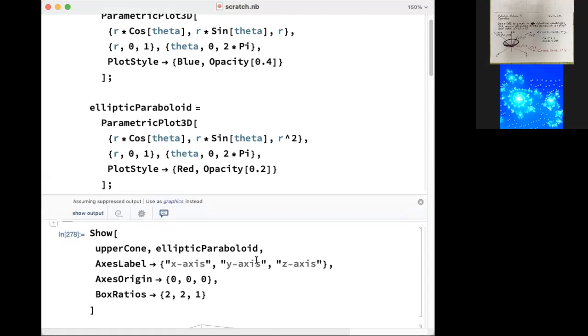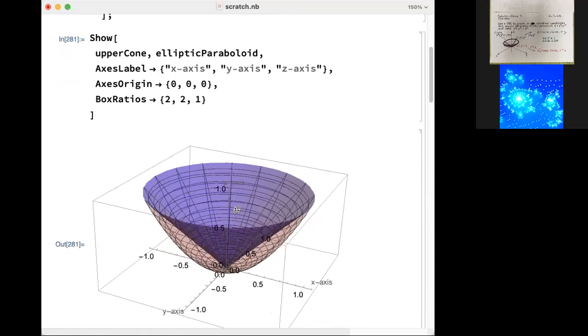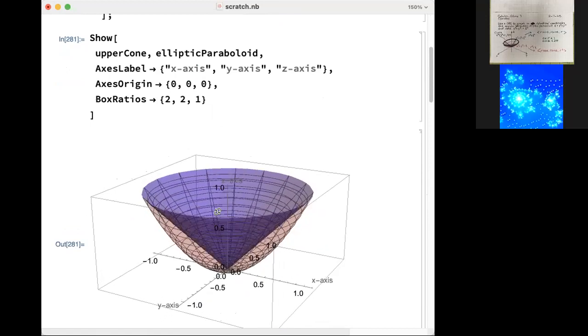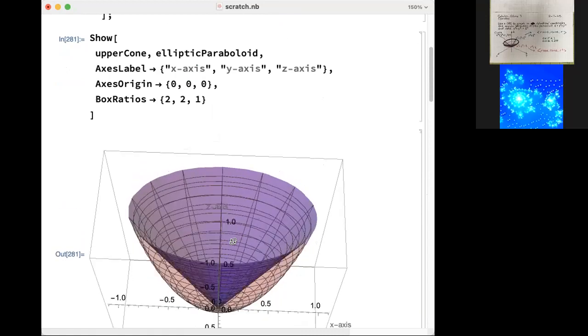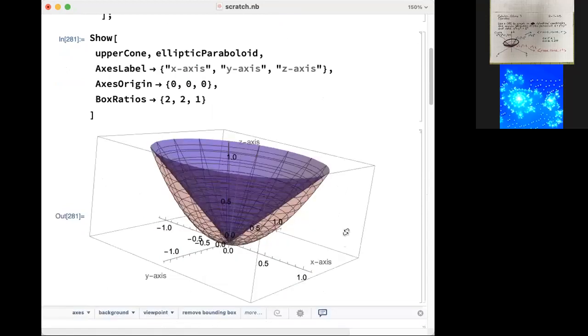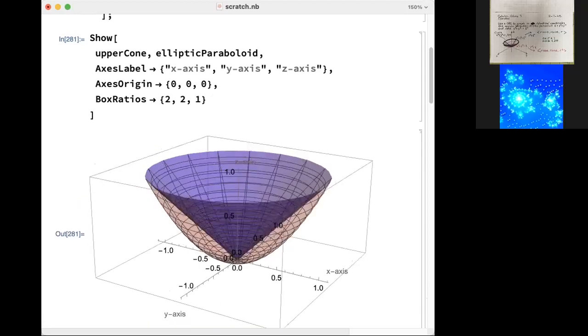So now when I execute those commands, I can show you the upper cone, the elliptic paraboloid together. I'll label the axes, x axis, y axis, z axis. I'll put the origin of the axes at zero, zero, zero, kind of a traditional drawing. And I'll choose the side ratios of the boxes to show this to good effect. Here is the cone in blue and the elliptic paraboloid in red. The transparency makes this a fun visualization. Thank you.